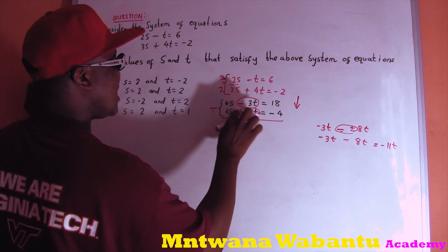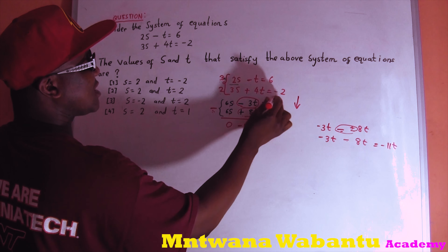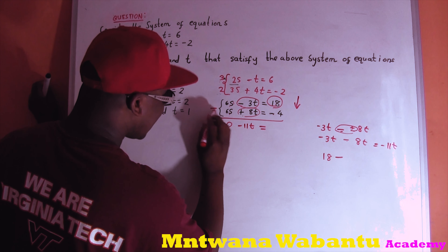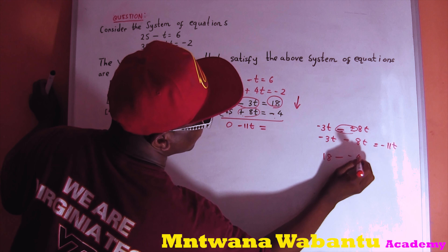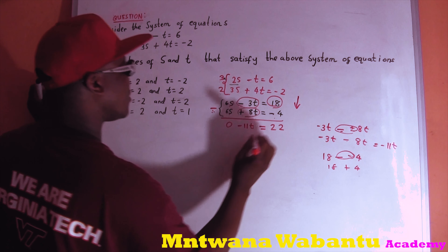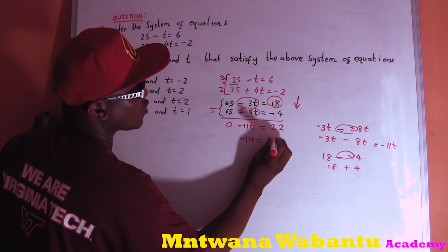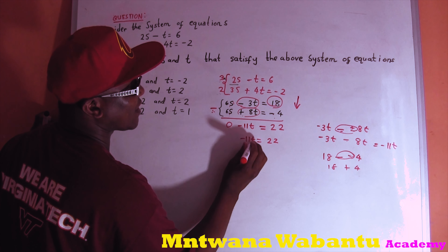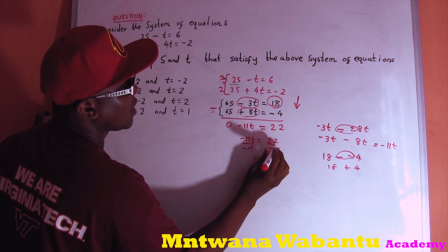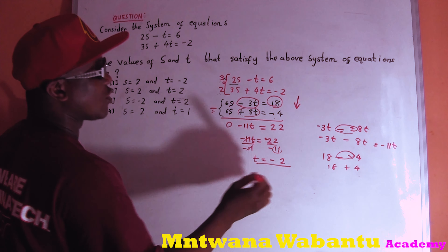So we get negative 11t on the left. On the right side: 18 minus negative 4, which is 18 plus 4, equal to 22. So negative 11t equals 22. We want the value of t, so divide both sides by negative 11.